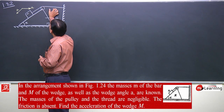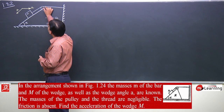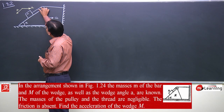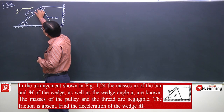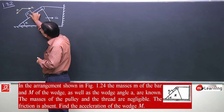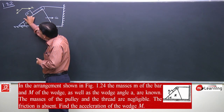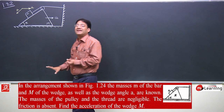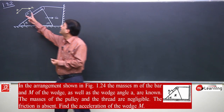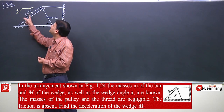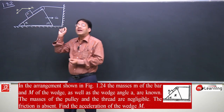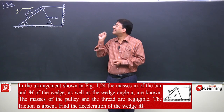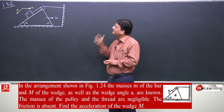When this wedge moves with acceleration A, this thread would get free and accelerate in this direction with acceleration A. Hence this block will have two components of accelerations.